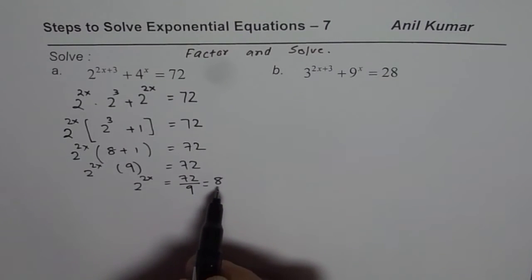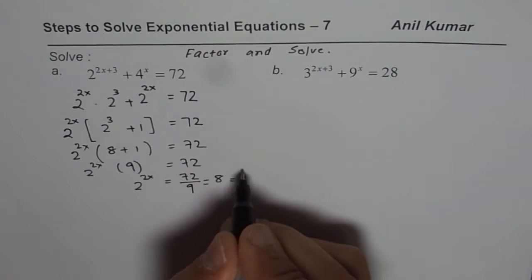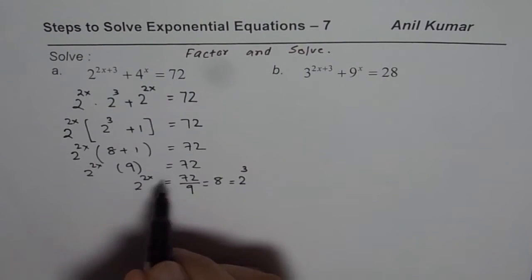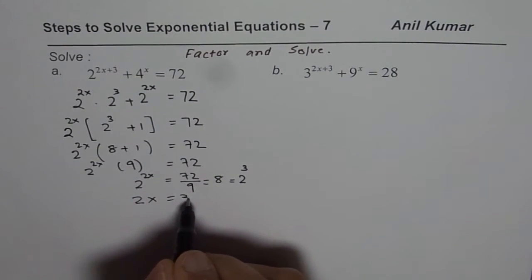To find the solution what can we do? We need to now write 8 as power of 2. So we could write 8 as 2 to the power of 3. Since the bases are same, exponent should be equal. So we have 2x equals 3 or x equals 3 by 2.